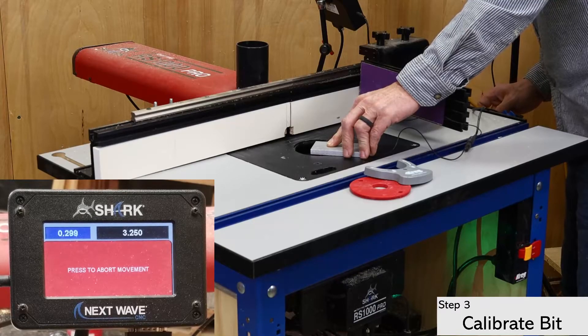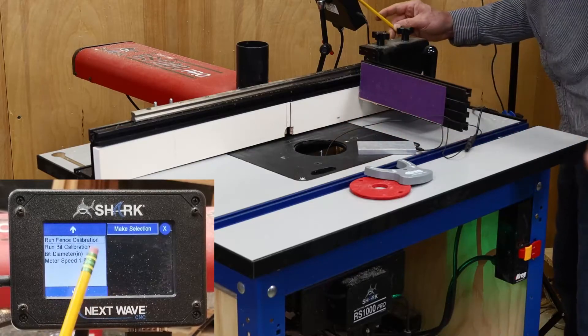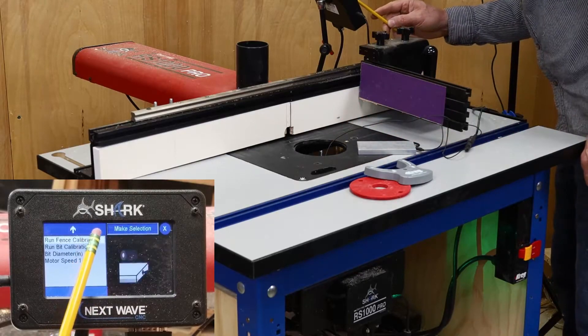Press OK to proceed with the bit calibration. The bit will rise up, touch the bottom of the plate, and then go back down below the table. You can now proceed to the fence calibration.